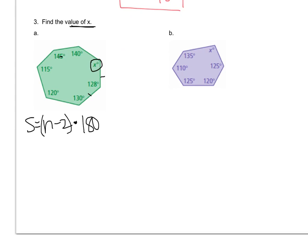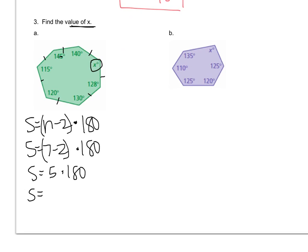This shape has 7 sides, so using the formula that's 5 times 180, which equals 900 degrees. Now I know the total is 900, but I want to figure out how many degrees are in angle X. Pause the video and add up the other angles. I added them up and got 778 degrees. So 900 minus 778 means X equals 122 degrees.